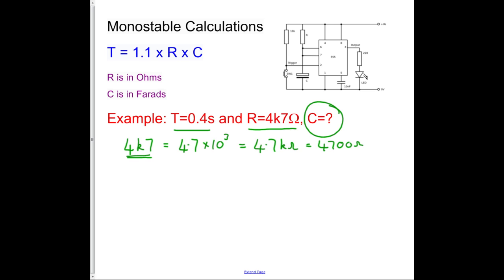So let's put it into our equation. So we've got T equals 1.1 times R times C. So we want to find C, so rearrange C equals T divided by brackets again. This times the R is on the bottom. I always use the brackets, and so should you.